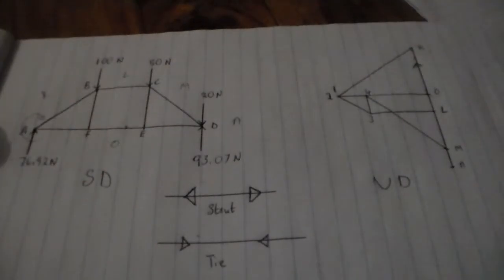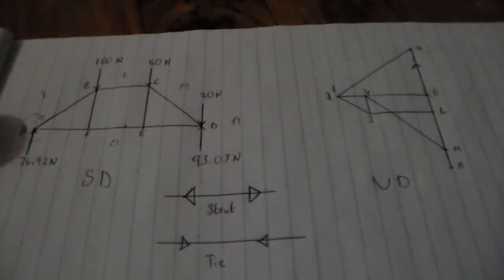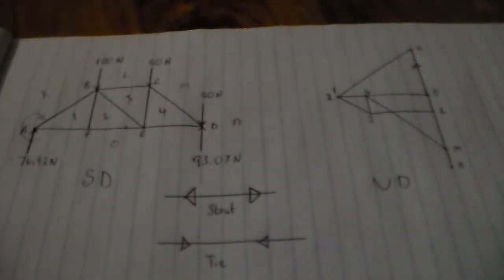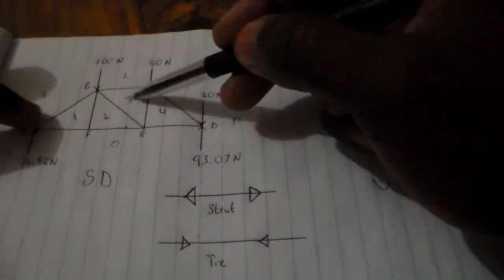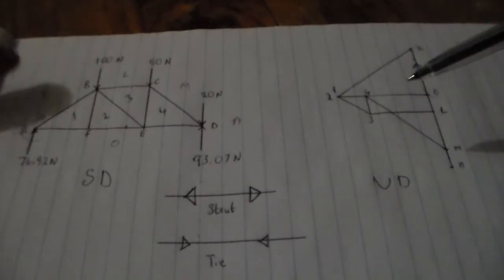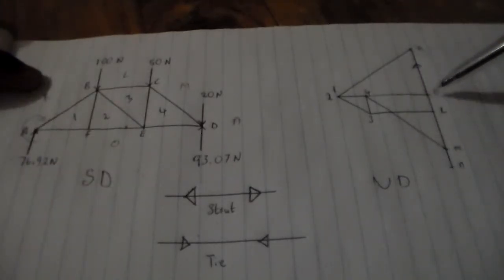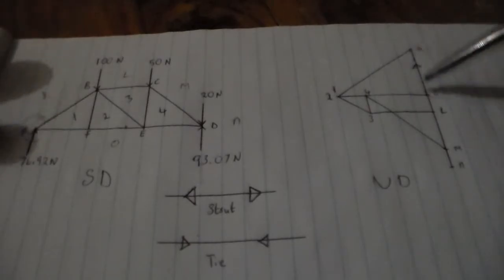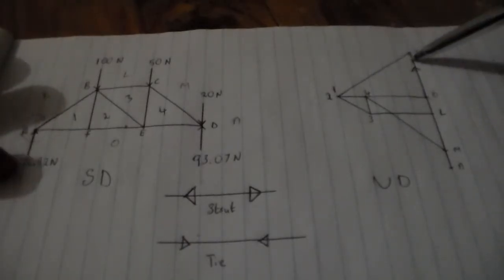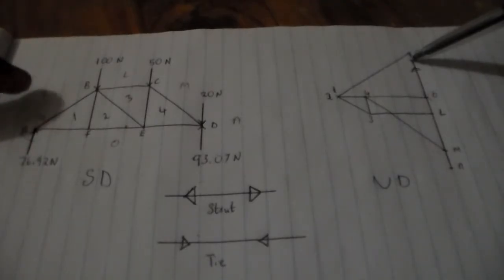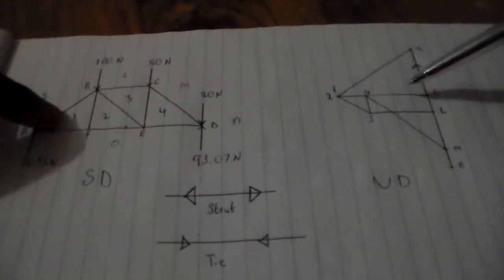Let me complete the diagram. We have members labeled 1, 2, 3, and 4, so now our diagram is complete. Continuing from before: from O to K is the direction of the upward force of 76.92 N. From K, still rotating clockwise at point A, we move from K to 1.